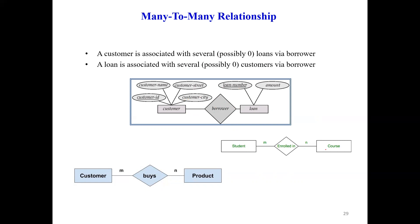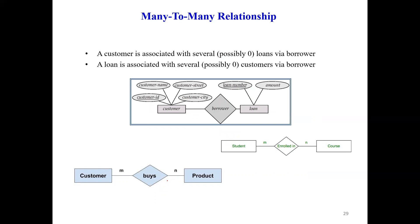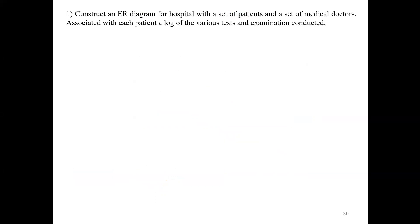Examples of many-to-many relationships: students enroll in courses — many students can enroll in Java and any student can enroll in many courses. Customer buys product — one product can be bought by many customers and one customer can buy many products. We have now studied the various notations of the ER diagram.